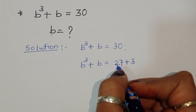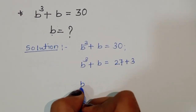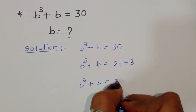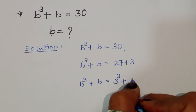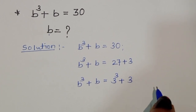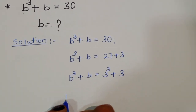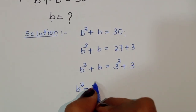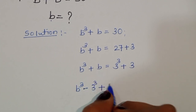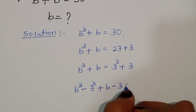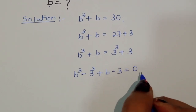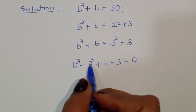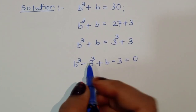Now this 27 we can write in cube form. So b³ + b = 27, that is the cube of 3 — 3³ — plus 3. Now rearranging: b³ minus 3³ plus b minus 3 is equal to 0.